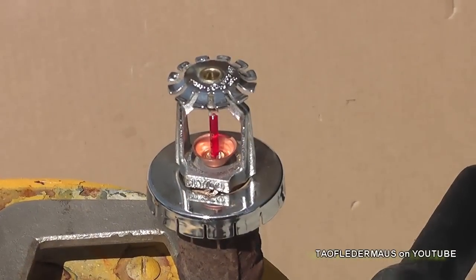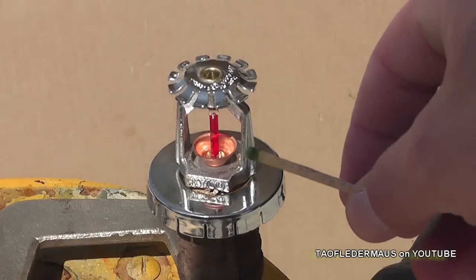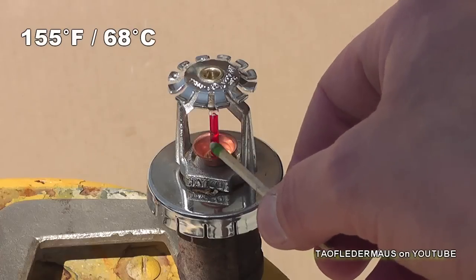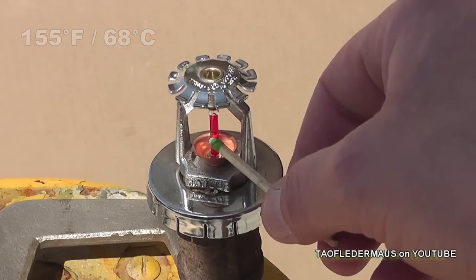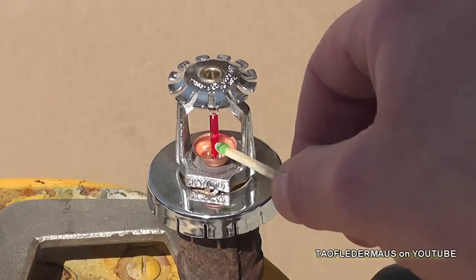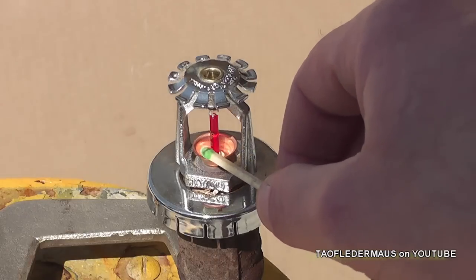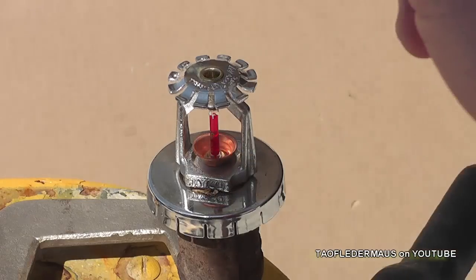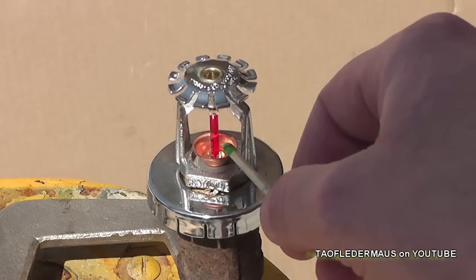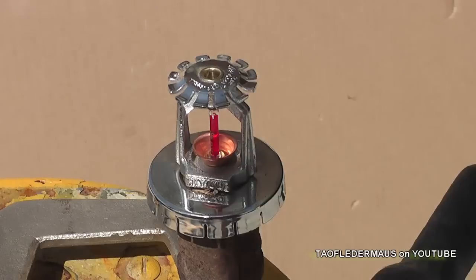This particular one works when it gets to 155 degrees. There's a liquid in here that will expand in this glass ampule and break it and release this plug, which is called a pip, and it's a one-time deal. You can't reset them, and once that is open, it sprays water out.